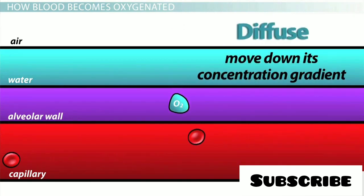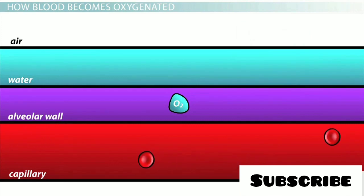You may recall that dissolved molecules diffuse quickly in the direction of a lower concentration, which in this case is the oxygen-depleted blood in the surrounding capillaries. So oxygen diffuses from the saturated water coating the alveoli across the alveolar wall, through the capillary wall, and into the oxygen-depleted blood.